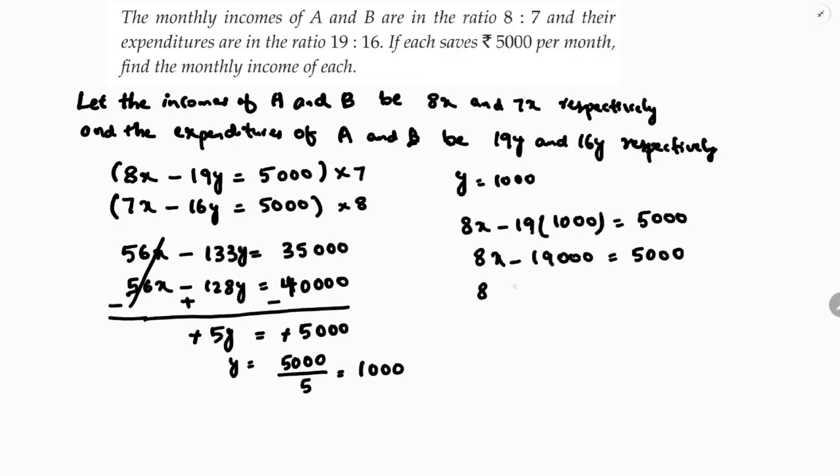8x minus 19000. 8x equals 5000, so 8x equals 5000 plus 19000, so 8x equals 24000. So x equals 24000 by 8, which is nothing but 8×3=24, so 3000.